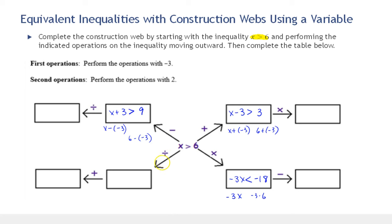The next operation is division. We have x divided by negative 3 on the left and 6 divided by negative 3 on the right. We need to reverse the direction because we divided by a negative. So we write this as negative x over 3 is less than negative 2, since 6 divided by negative 3 is negative 2.